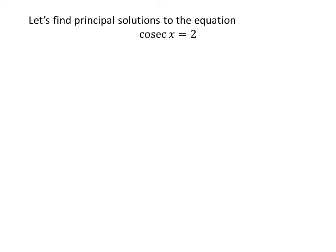Let us first find the principal solutions to the equation cosecant of x is equal to 2. We know the solutions to the trigonometric equation for which x is greater than or equal to 0 and less than 2 times pi are the principal solutions.